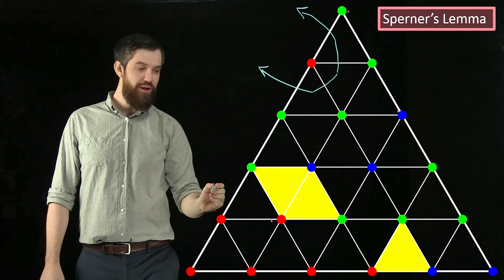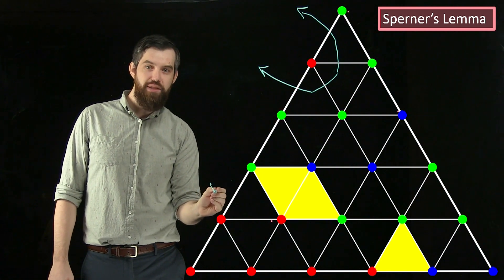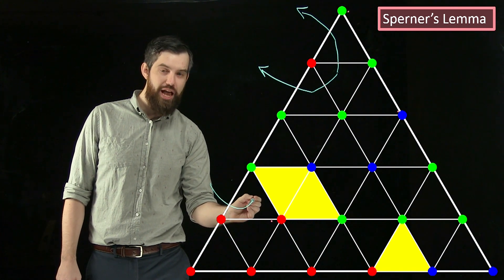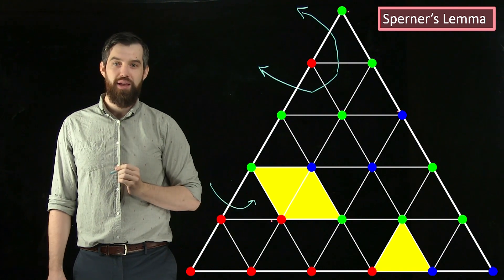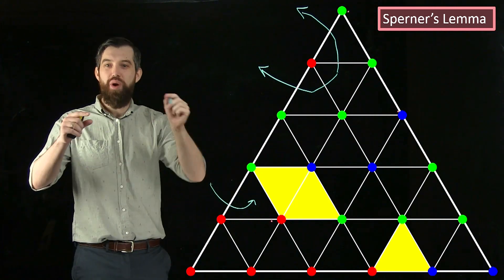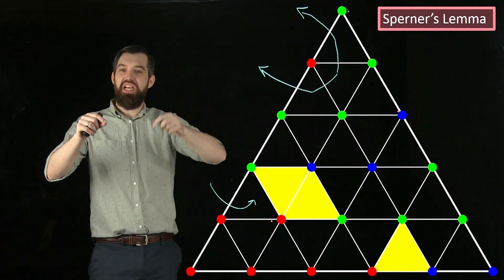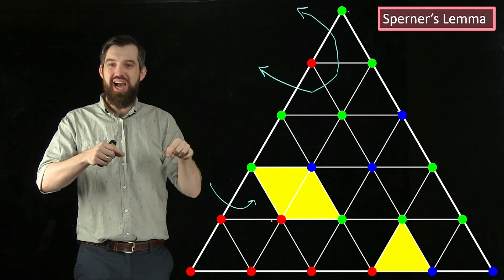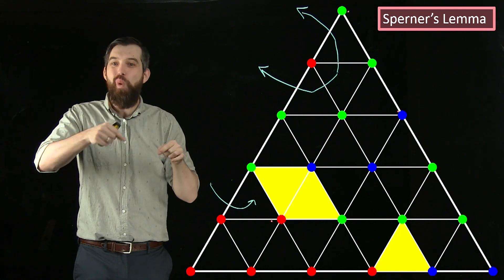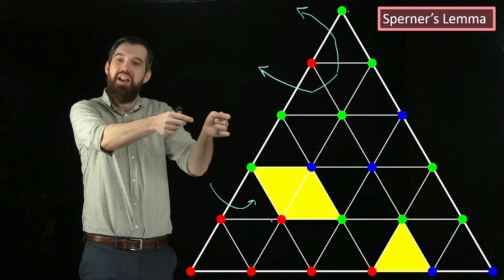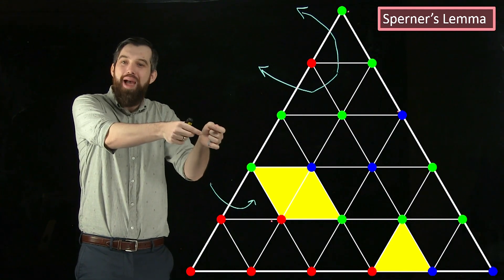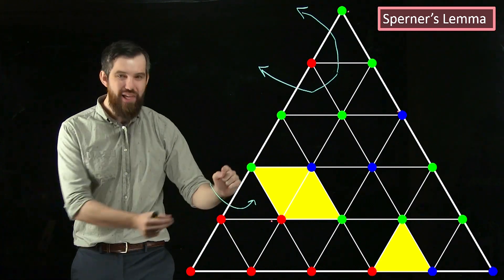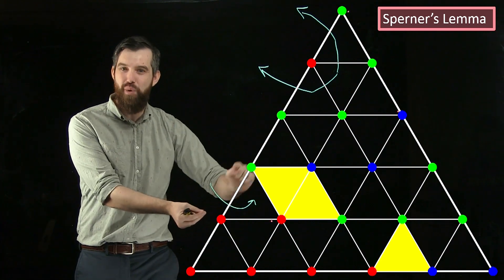How else can I do it? I could come in through a red-green edge, and then I have a problem: as soon as I get into a triangle with all three colors, I can't get out, because there's only one red-green edge. So I go in and there's no exit, or I could turn around and go right back out the same way — either way, it only takes up one of these edges.